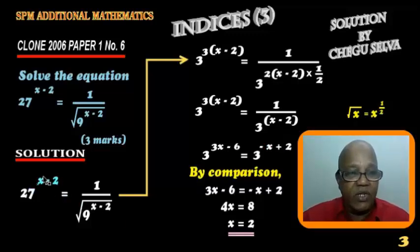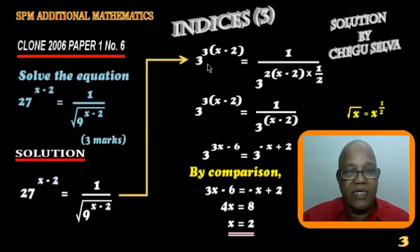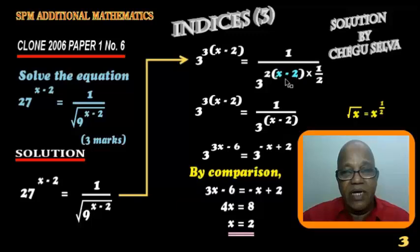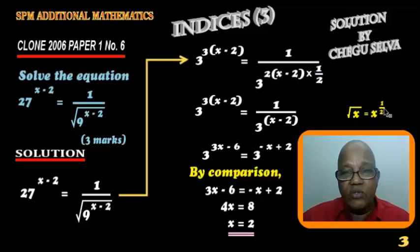Twenty-seven to the power of X minus two can be written as three cubed, bracket X minus two, equals one over three squared — which is nine — bracket X minus two, the power here times one over two from the square root.